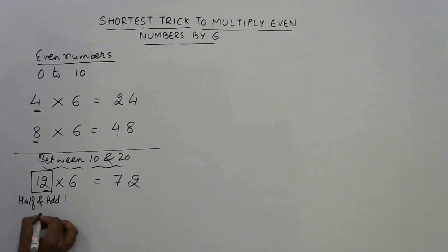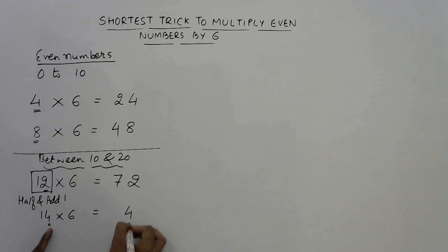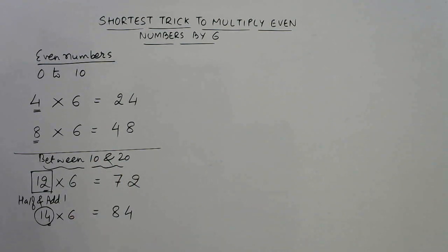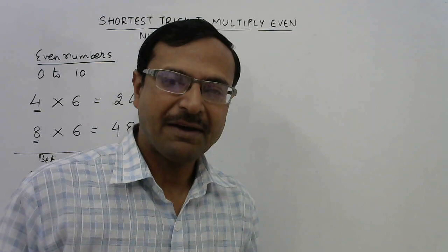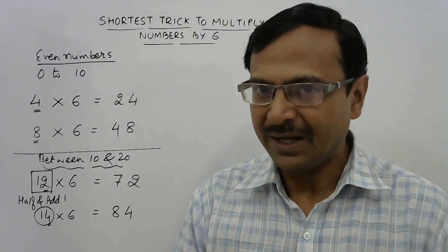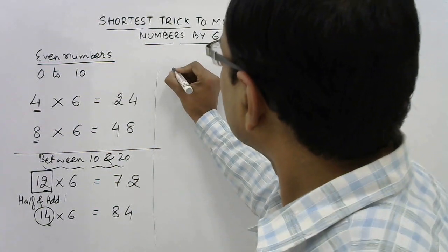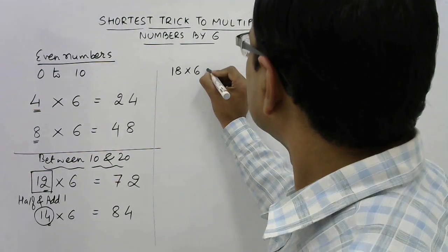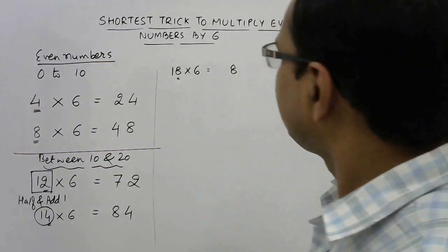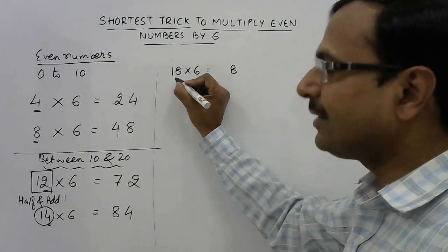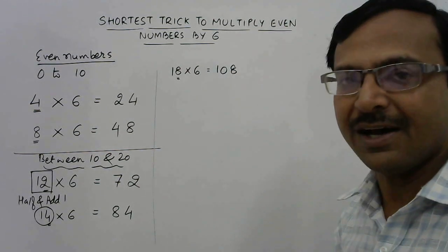Let us apply it for 14. The answer will end with 4 because we have a 4 here. What is half of 14? It is 7, and plus 1 it is 8. So 84 is the answer. We have done numbers up to 20. Let us take one more example: 18 into 6. Our answer is going to end with 8. Half of 18 is 9, one more than that is 10. So you have 108 as the answer.